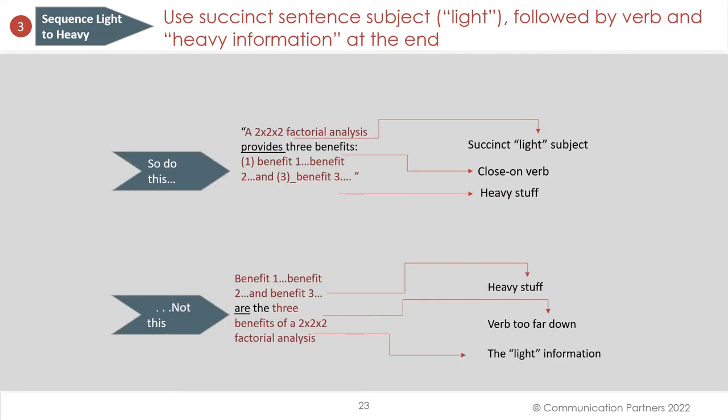Next idea: sequence light to heavy. Use a short, light, succinct subject in every sentence, followed as closely as possible by the verb, with all the heavy information at the end. For example, 'a two-by-two-by-two factorial analysis provides three benefits — benefit one, benefit two, benefit three' works fine even if those benefits are lengthy. But if the subject itself lists benefit one, benefit two, benefit three before reaching the verb, it takes forever to get to the verb and we have no idea how to think about those benefits. The verb is too far down and all the heavy information is at the end.